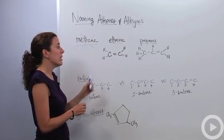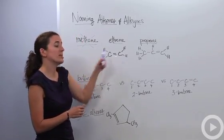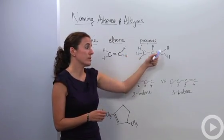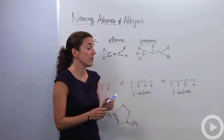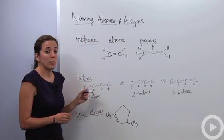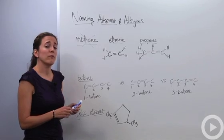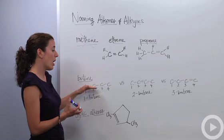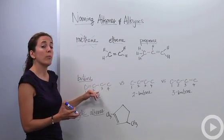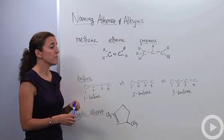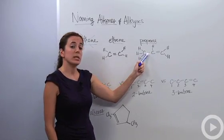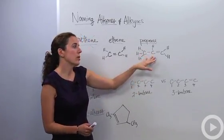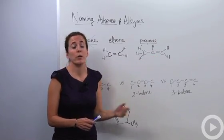So we're going to start with ethene. Ethene is two carbons double bonded together. Propene is three carbons with a double bond within the compound. If you go back to propene and the double bond is in a different position, it's actually the same compound just flipped around, so it's still propene.